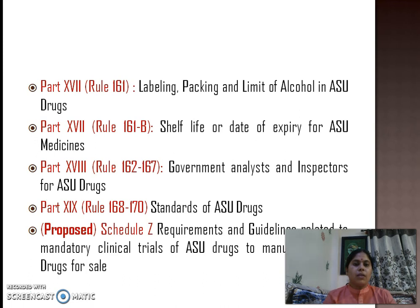Part 18, Rules 162 to 167, relates to government analysts and inspectors for ASU drugs. Part 19, Rules 168 to 170, relates to the standards of ASU drugs. The proposed Schedule Z relates to requirements and guidelines for mandatory clinical trials of ASU drugs to manufacture ASU drugs for sale. This Schedule Z was proposed in 2012 but is opposed by many herbal industries due to the mandatory clinical trials requirement, and it is still under discussion.